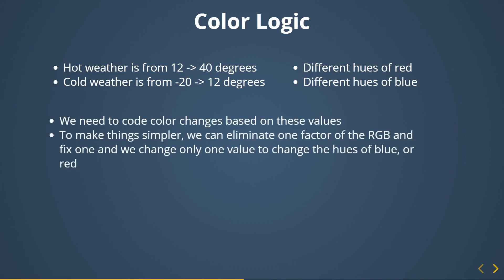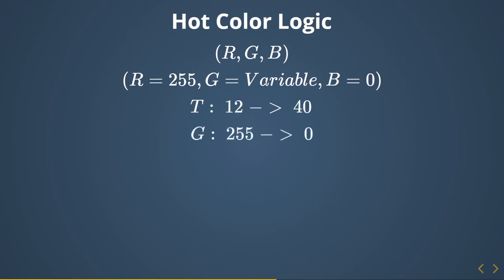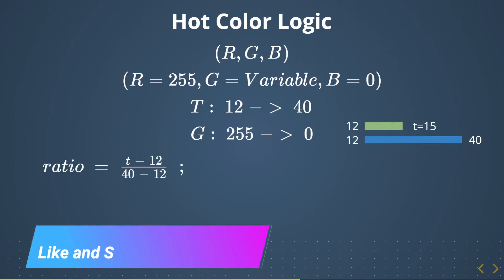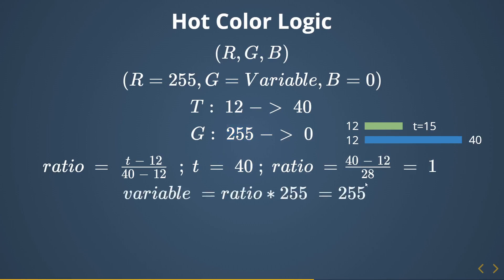We decided to make things simpler by eliminating one factor of RGB and keeping one constant. In the hot color logic we keep the red component always at maximum, which is 255, eliminate blue completely, and play with the green variable to change how red the color is. If t is 15, that's t minus 12 over 40 minus 12, giving the ratio. If t is 40, the ratio becomes 1, and multiplying by 255 gives 255.